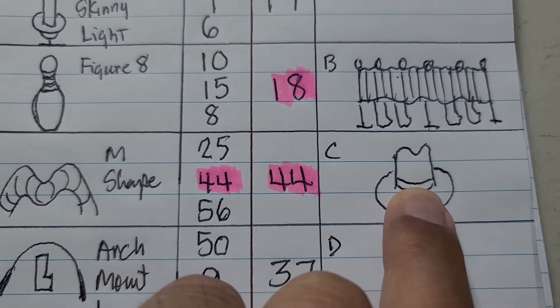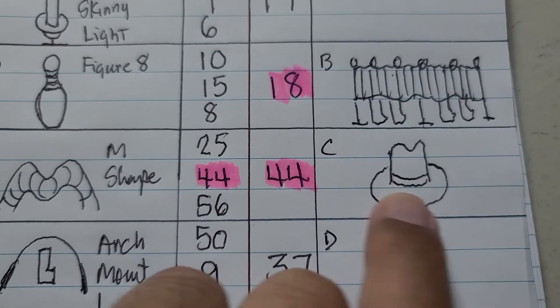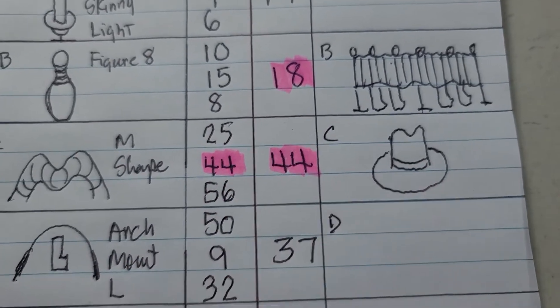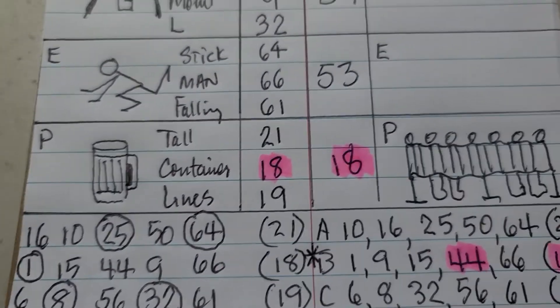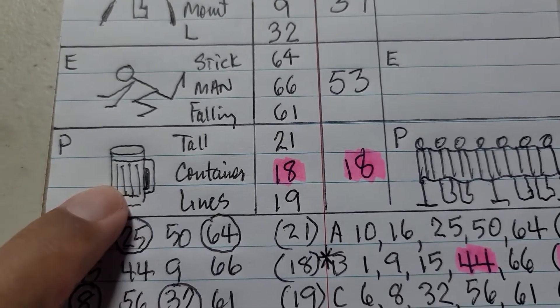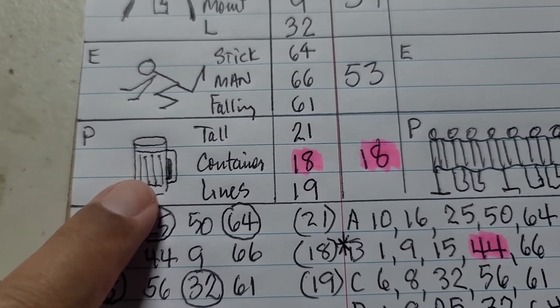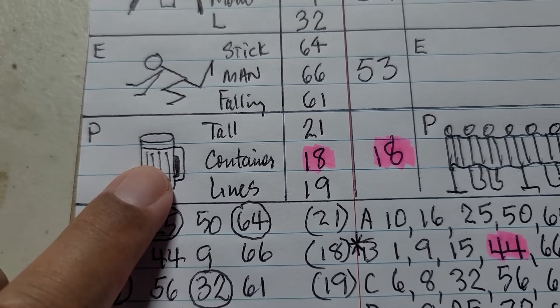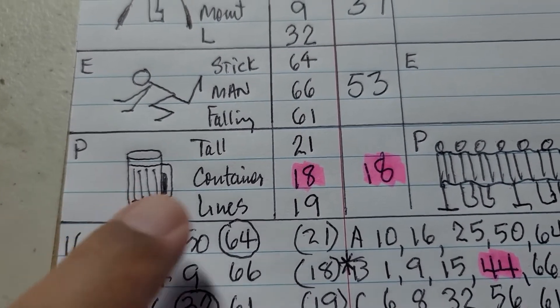And the second secondary read was the number 18, and the sketch here is a beer mug, and this represents the number 21.